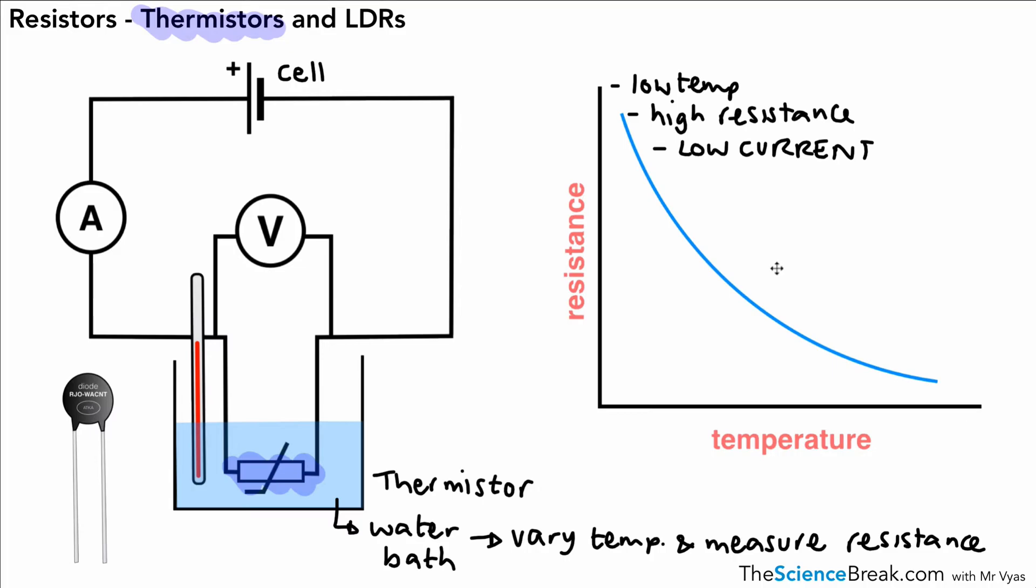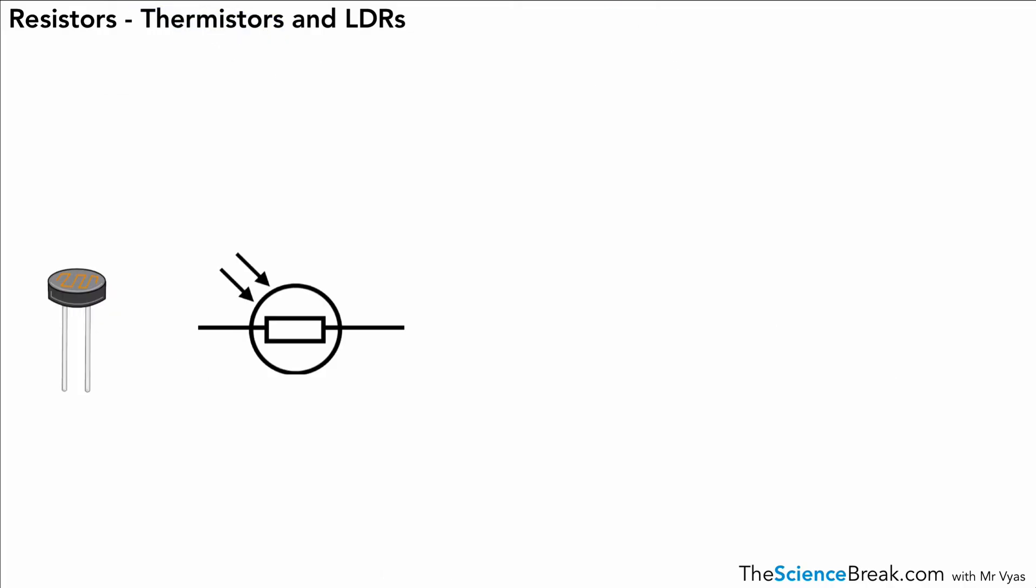What we're going to look at next is a light dependent resistor. We can call that an LDR. With an LDR, that's what one looks like in real life—that's kind of a picture of one—and this is the symbol for our LDR.